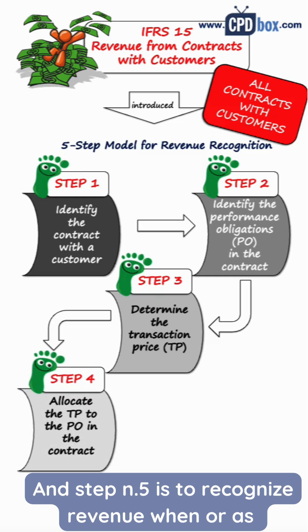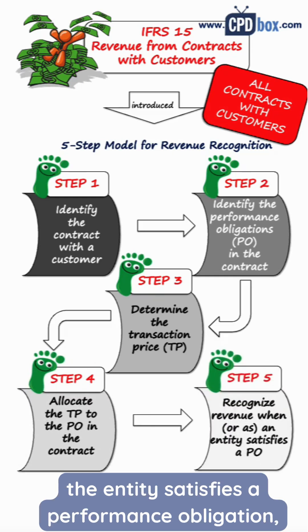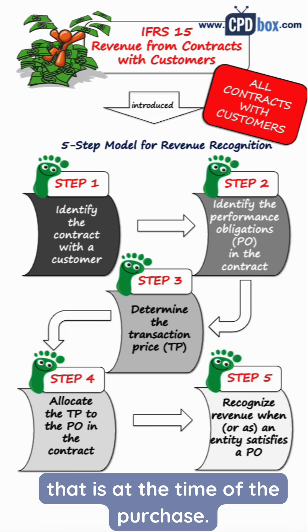And step number five is to recognize revenue when or as the entity satisfies a performance obligation — that is, at the time of the purchase.